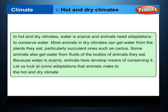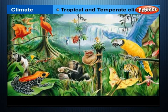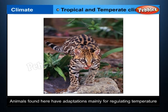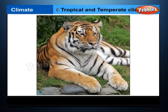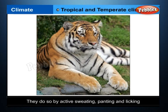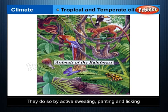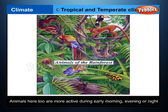In tropical and temperate climates, it is hot and humid in the tropics and quite warm in the temperate regions. Hence, animals found here have adaptations mainly for regulating temperature and for faster evaporation of water so that it doesn't get too sticky and uncomfortable. Evaporation of water from the body leaves a cooling effect. They do so by active sweating, panting, and licking. Like in hot desert climates, animals here too are more active during early morning, evening, or night.